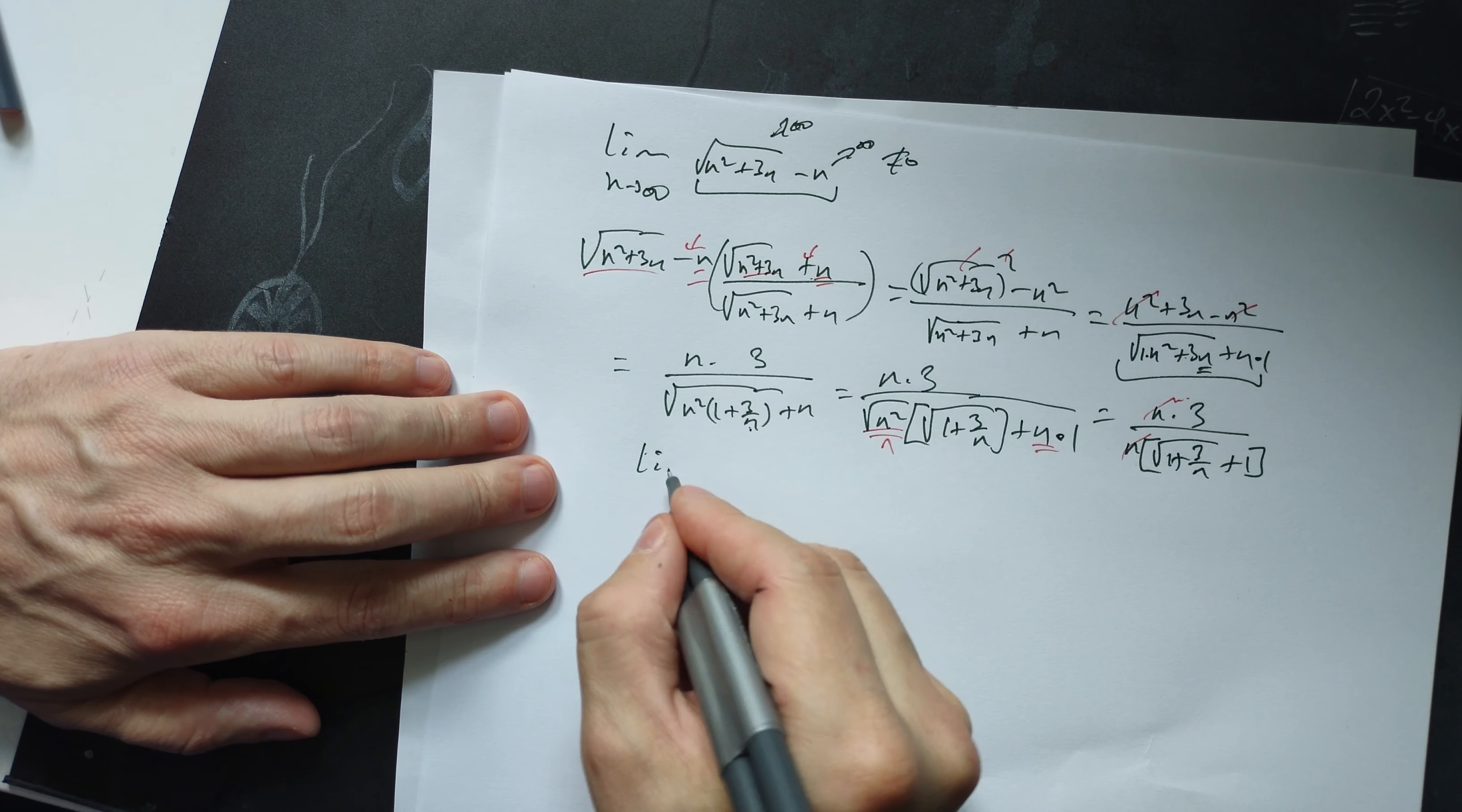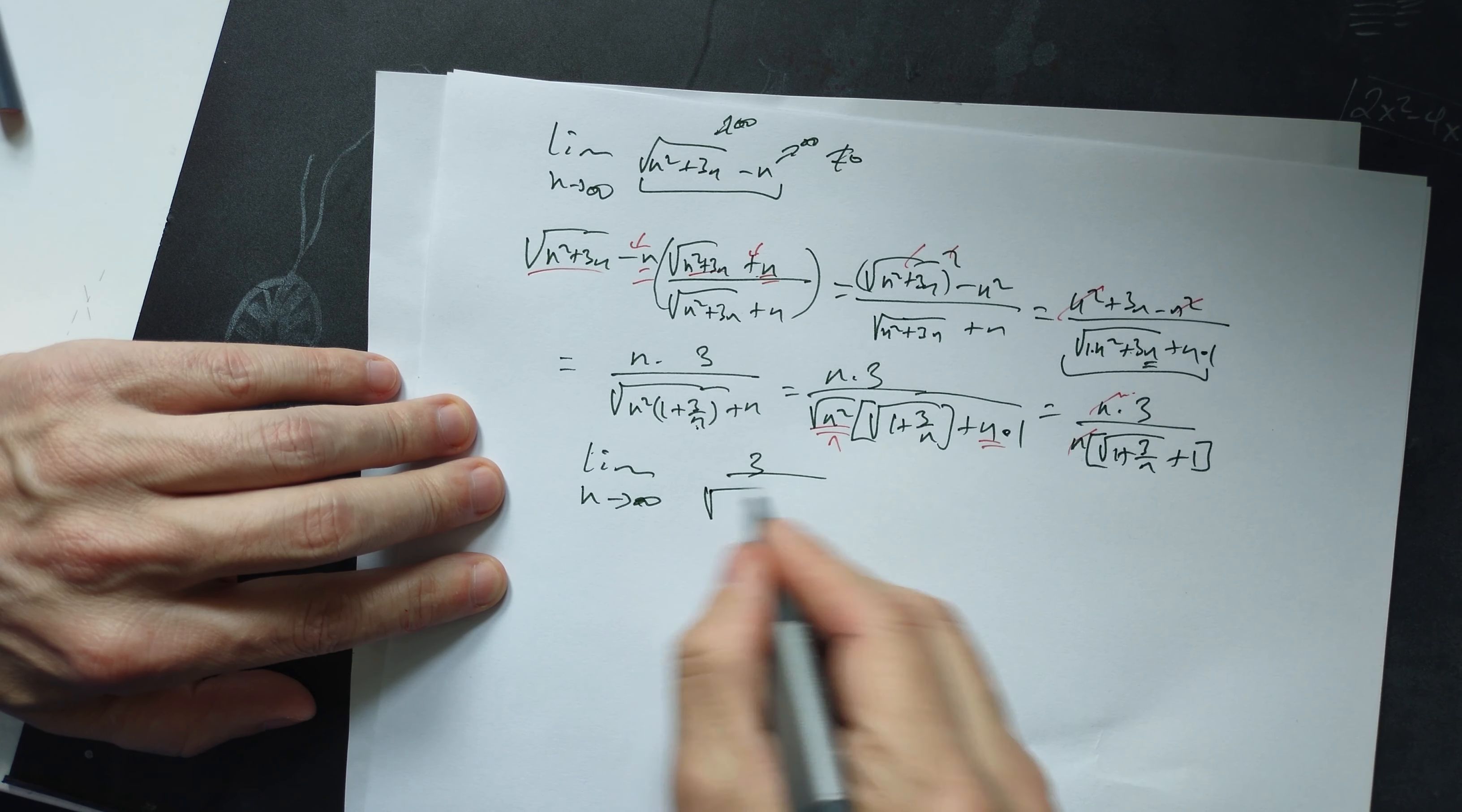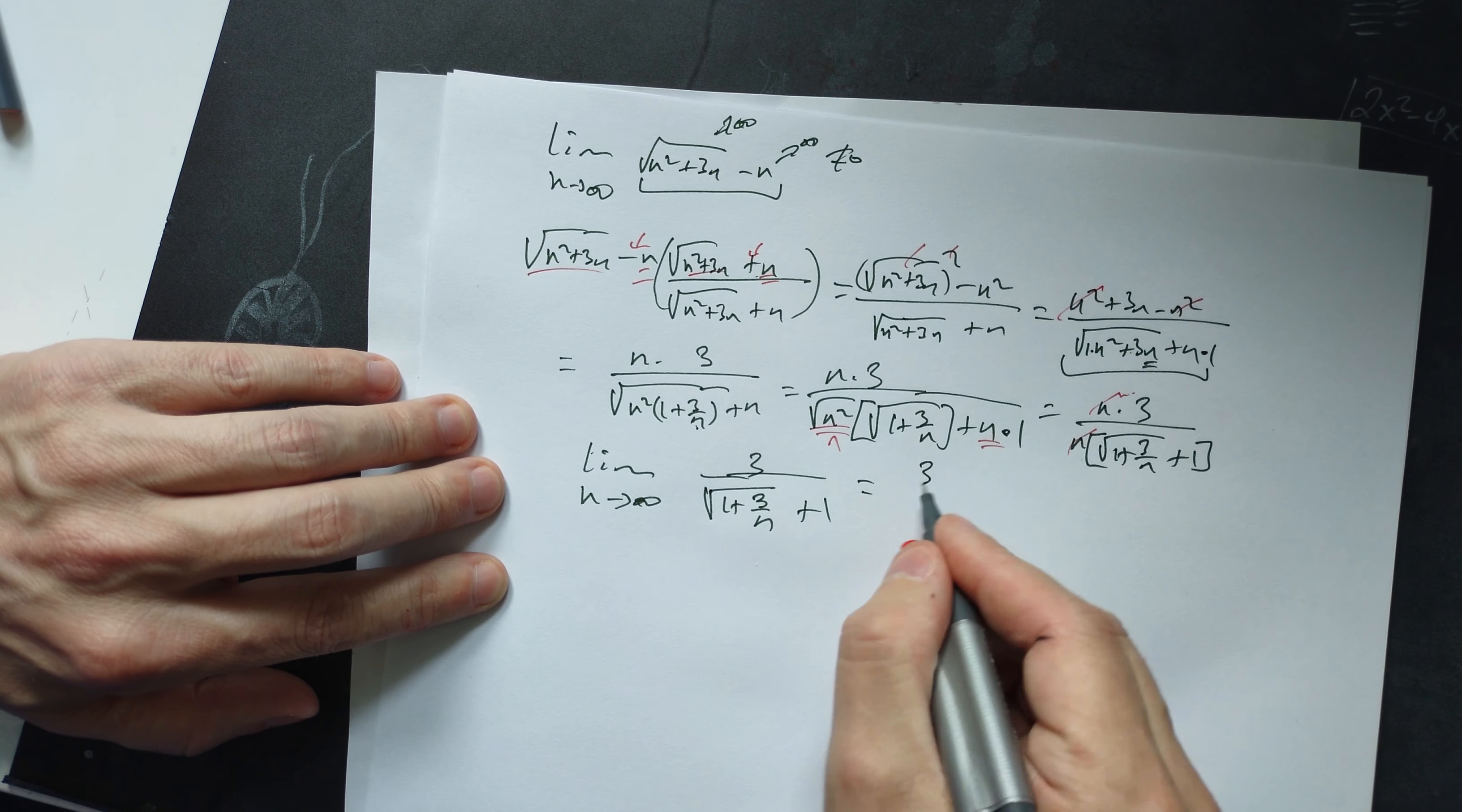So our limit can now be found as lim(n→∞) of 3/(√(1 + 3/n) + 1). You can distribute the limit independently to every part.